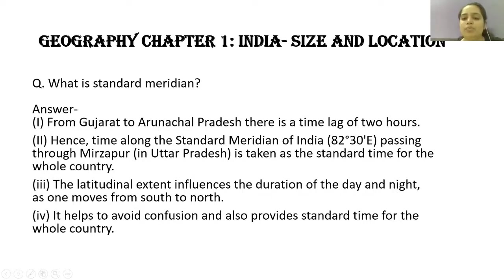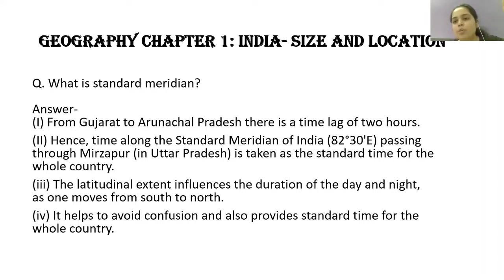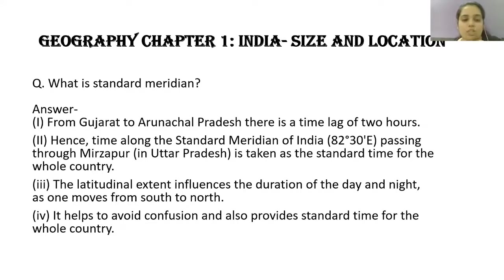The latitudinal extent influences the duration of day and night as one moves from south to north. As you move towards the poles — north pole or south pole — days are shorter and nights are longer because sun rays cannot reach there effectively. The equator is the most heated place with highest sunlight. As you move away from the equator towards the north, sunlight becomes slanted and less direct, so daylight is less and nights are longer.